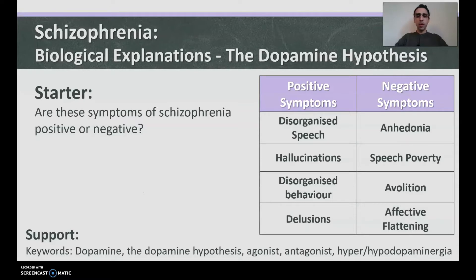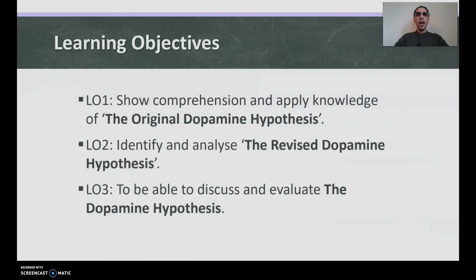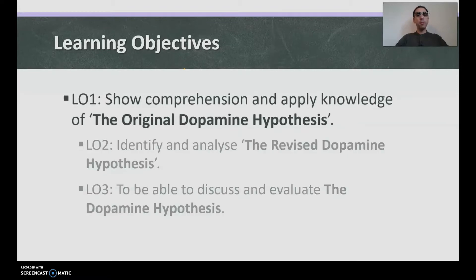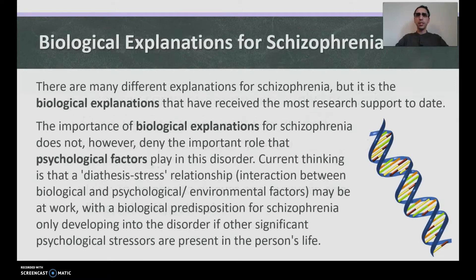Well done — and if you didn't do very well, don't worry! Here are our learning objectives for today. Number one: show comprehension and apply knowledge of the original dopamine hypothesis. Number two: identify and analyze the revised dopamine hypothesis — and yes, 'hypotheses' is the plural of 'hypothesis.' Number three: discuss and evaluate the dopamine hypothesis as a whole. Let's start with number one — the original dopamine hypothesis.